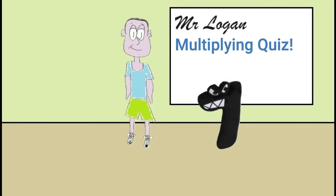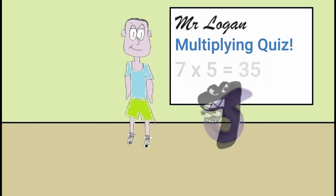Okay 7, what is 7 times 5? The answer is 35, Mr. Logan. I know this because I have been practicing. You're right 7, well done! Okay 6, your turn.